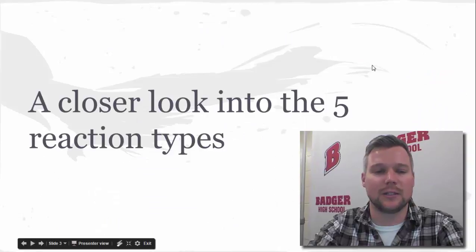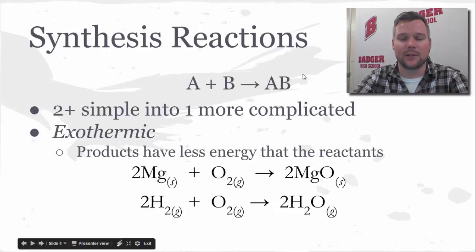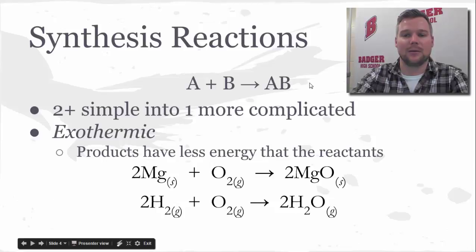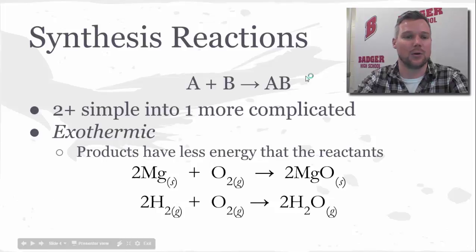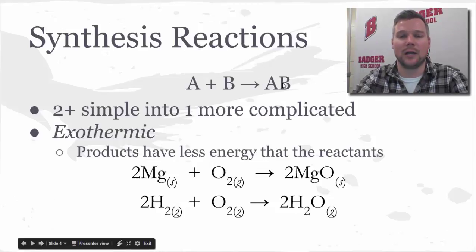Let's take a closer look at these five reaction types. We'll start with synthesis, where we take A plus B and that yields AB — simple things combining into something more complicated. You're going to want to put this general format into your notes in the general reaction patterns section, or on your note card. As we said, two or more simple things combine into one more complicated product. This tends to be exothermic because the amount of energy in the reactants is greater than the amount of energy stored in the product.